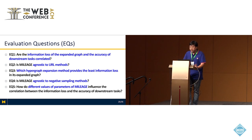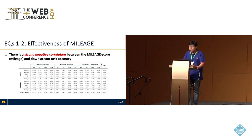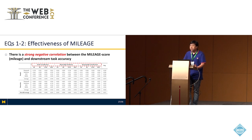Our experiments are designed to answer specific evaluation questions. The first is the correlation between the mileage score and accuracy. If information loss actually affects the accuracy of downstream tasks, then accuracy is expected to decrease as information loss increases. If our MILEAGE framework is properly designed, there should be a clear correlation between information loss and accuracy. We measured the information loss of expanded graphs, conducted downstream tasks on the graphs, measured the accuracy, and investigated the correlation between information loss and accuracy.